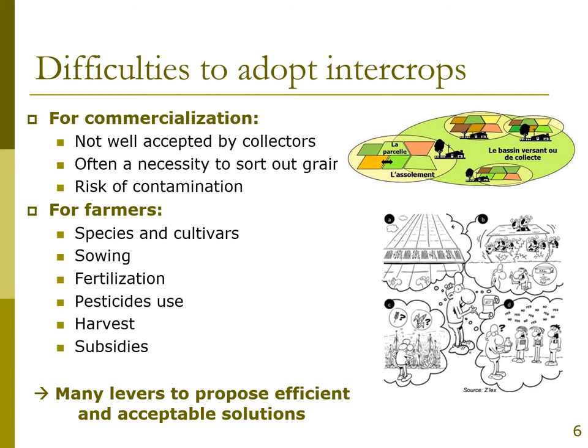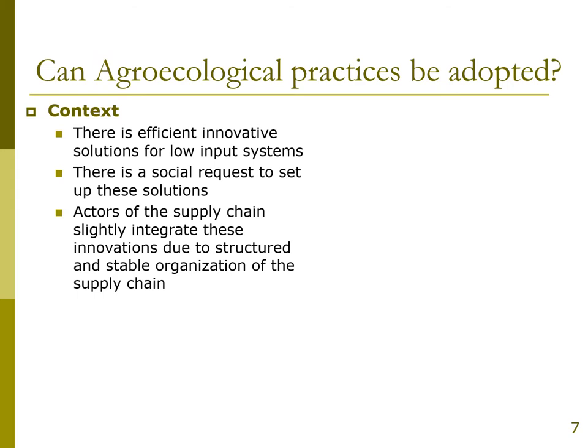So we understand that there are many possibilities to combine species and grow crop mixtures, but we have to propose efficient and acceptable solutions — not only for farmers, but also taking into account commercialization and the transformation of grains into products. The question is whether agroecological practices can be adopted and if yes, how.